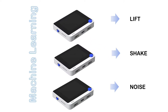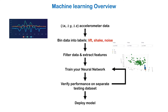We'll classify idle as noise. In this case we see changes in x, y, and z direction — that is our accelerometer data. From there, we bin these samples into three different bins: lift, shake, and noise. Once that is done, we filter the data and extract what we call features. This is very important — you can clean the noise. You don't want to put noise into the machine learning because you don't want to overfit your neural network. Filtering the data is very, very important.